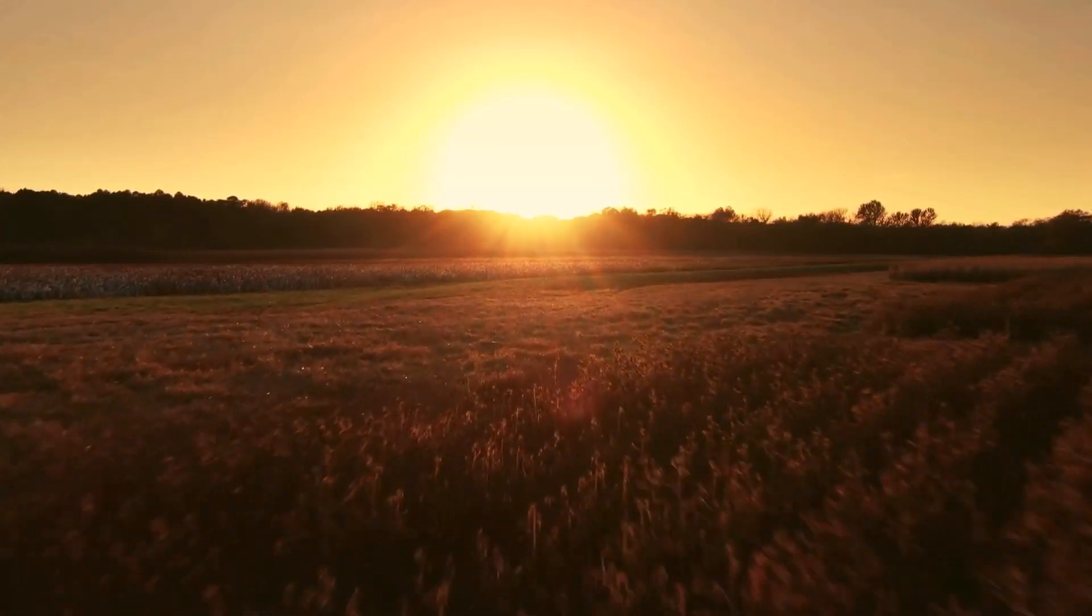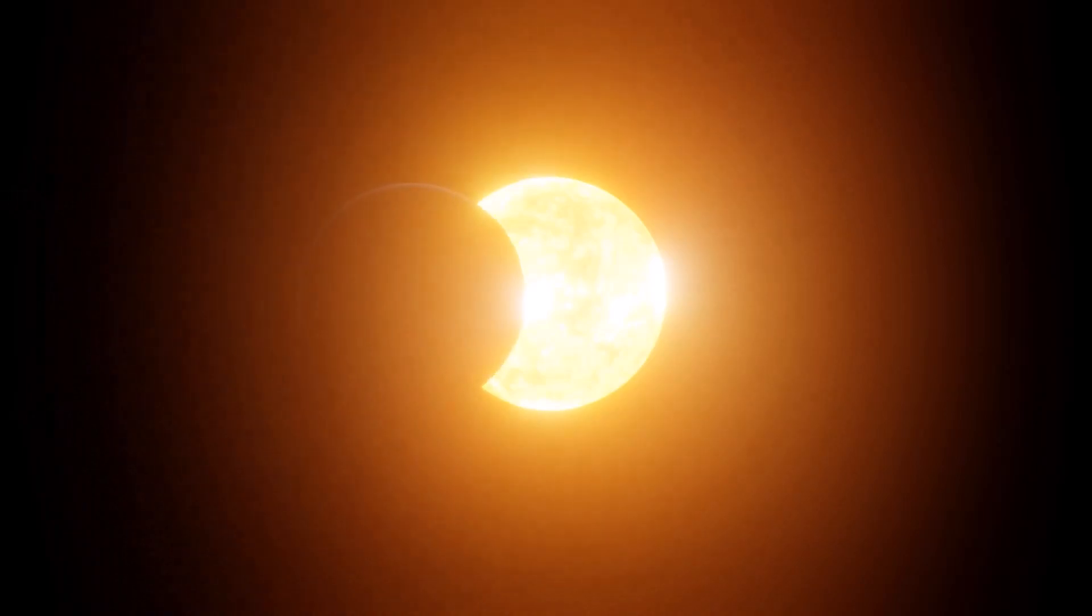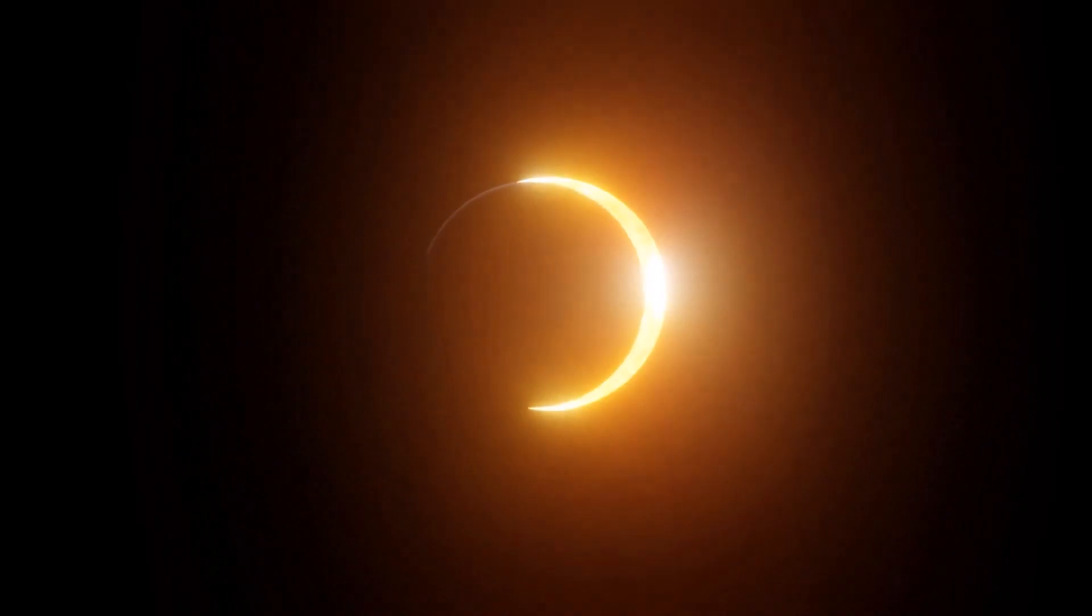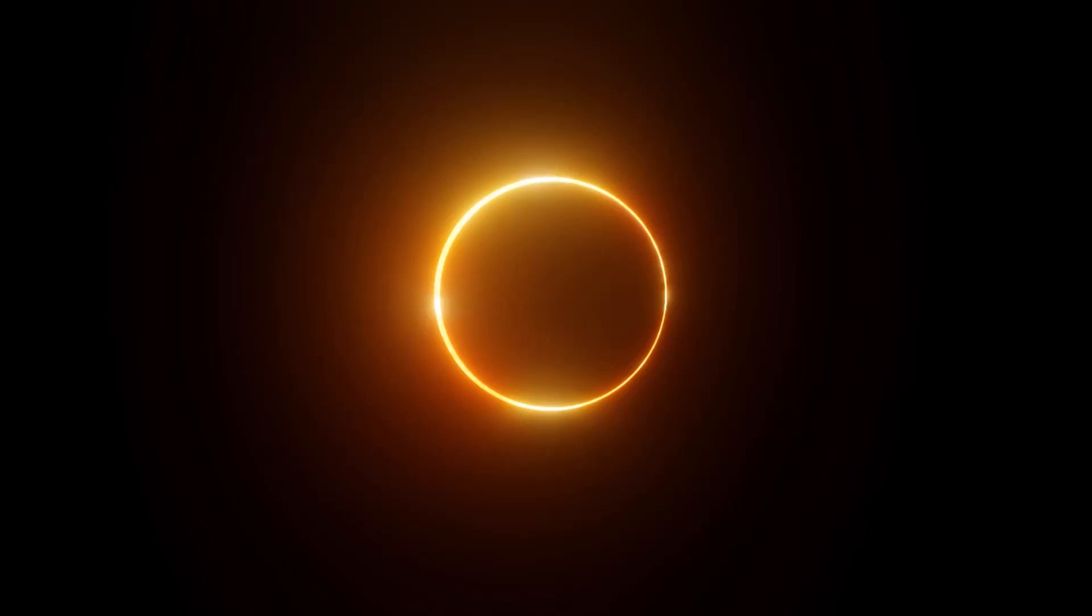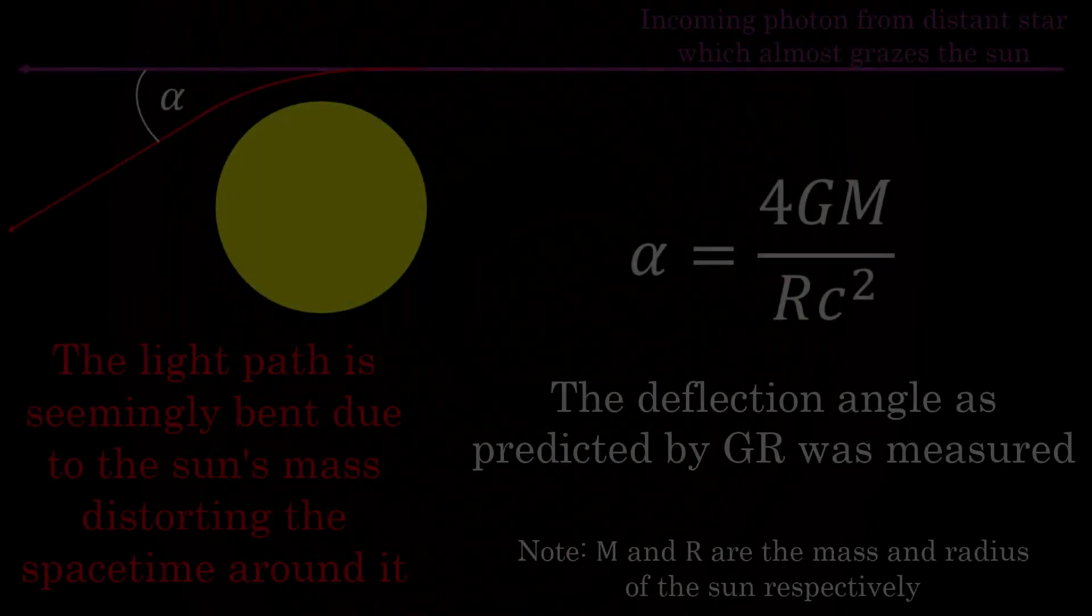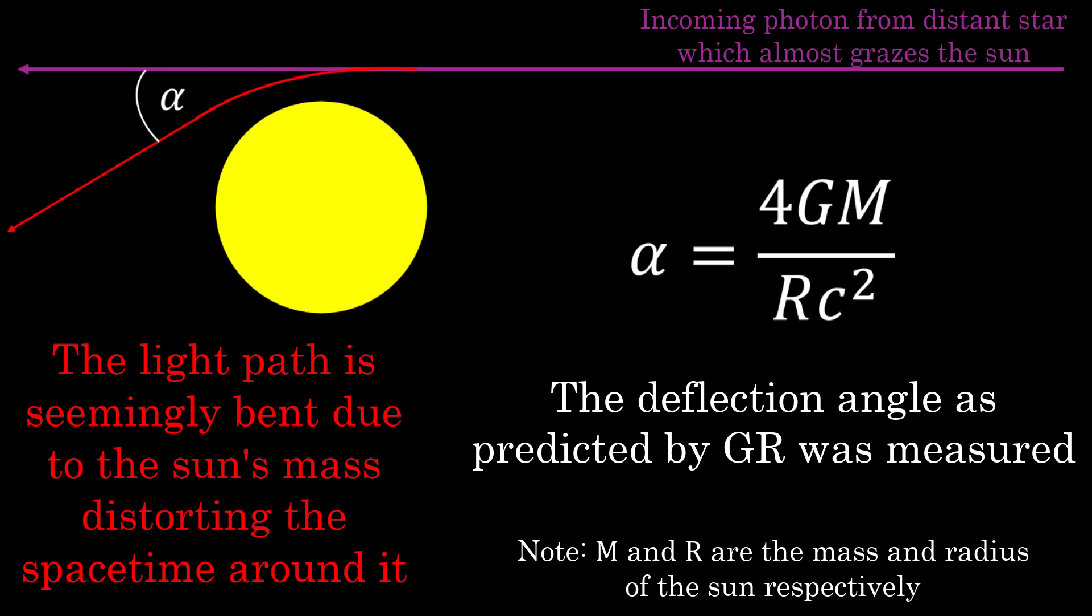The way this was worked around was by waiting until a total solar eclipse, until the light from the Sun gets blocked out by the Moon. That's exactly what Arthur Eddington did on the 29th of May 1919, allowing his team to observe deviations in the path of starlight as it almost grazes the Sun. The deflection of light due to the Sun's mass was directly observed, which was a famous result at the time.